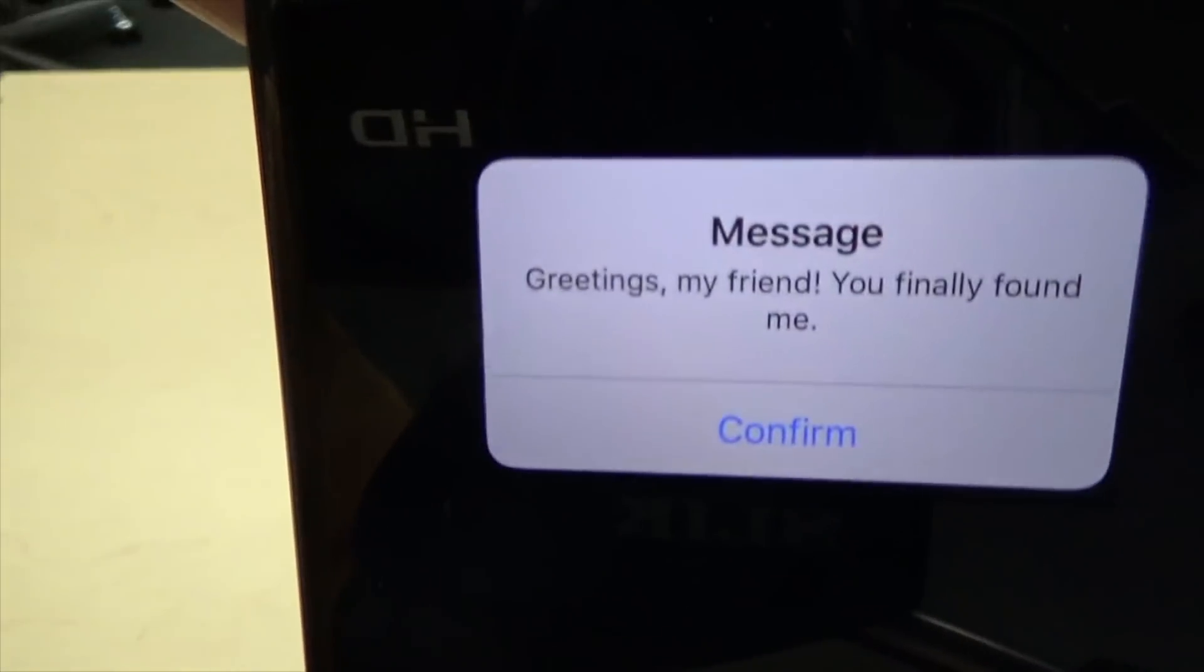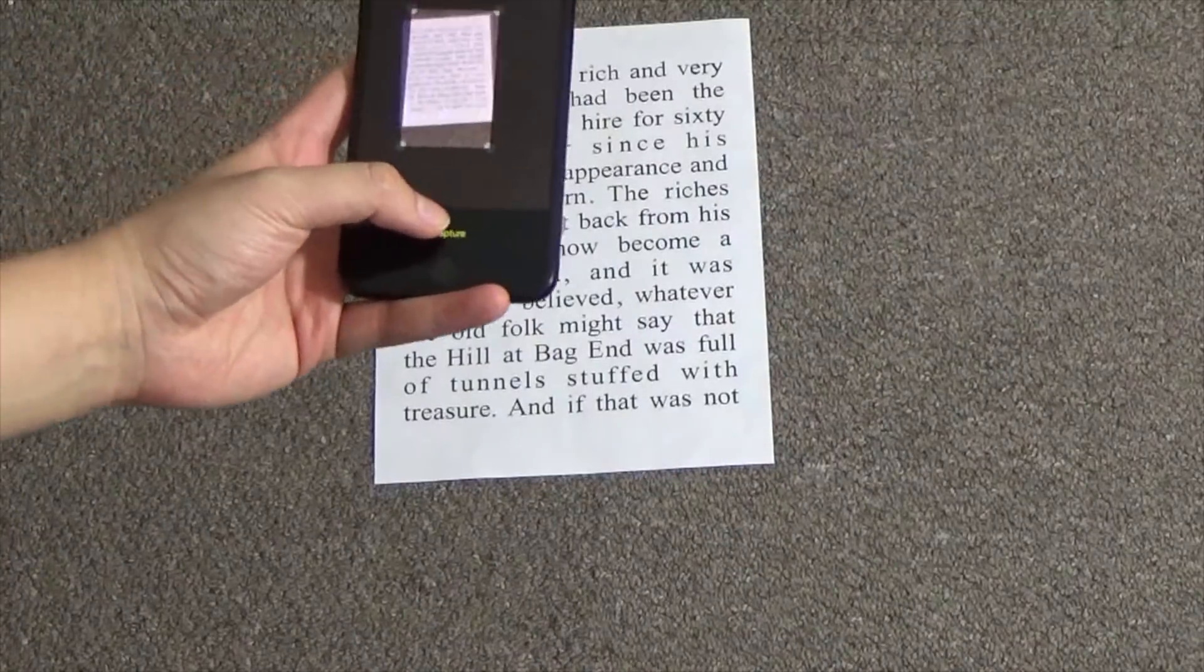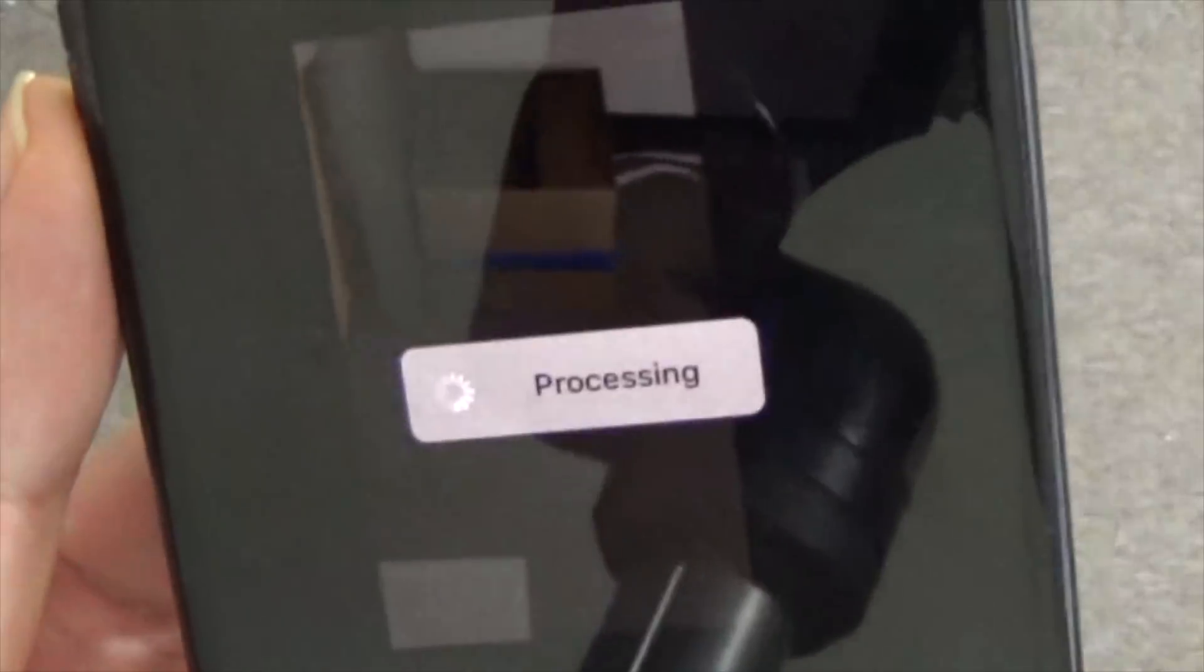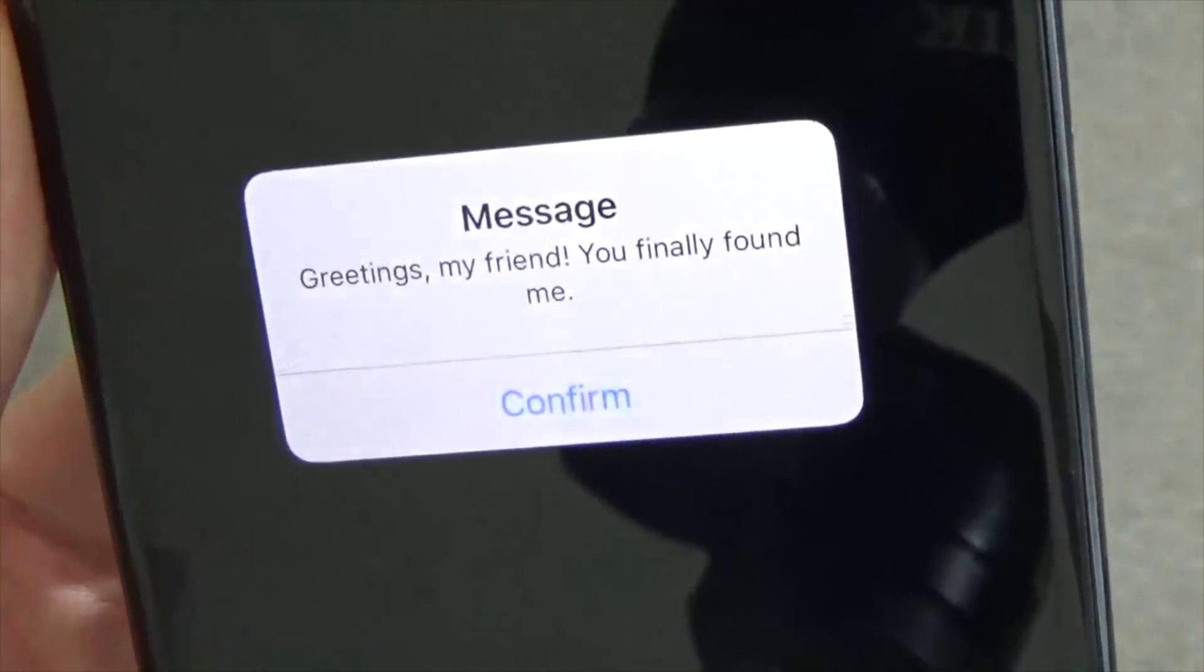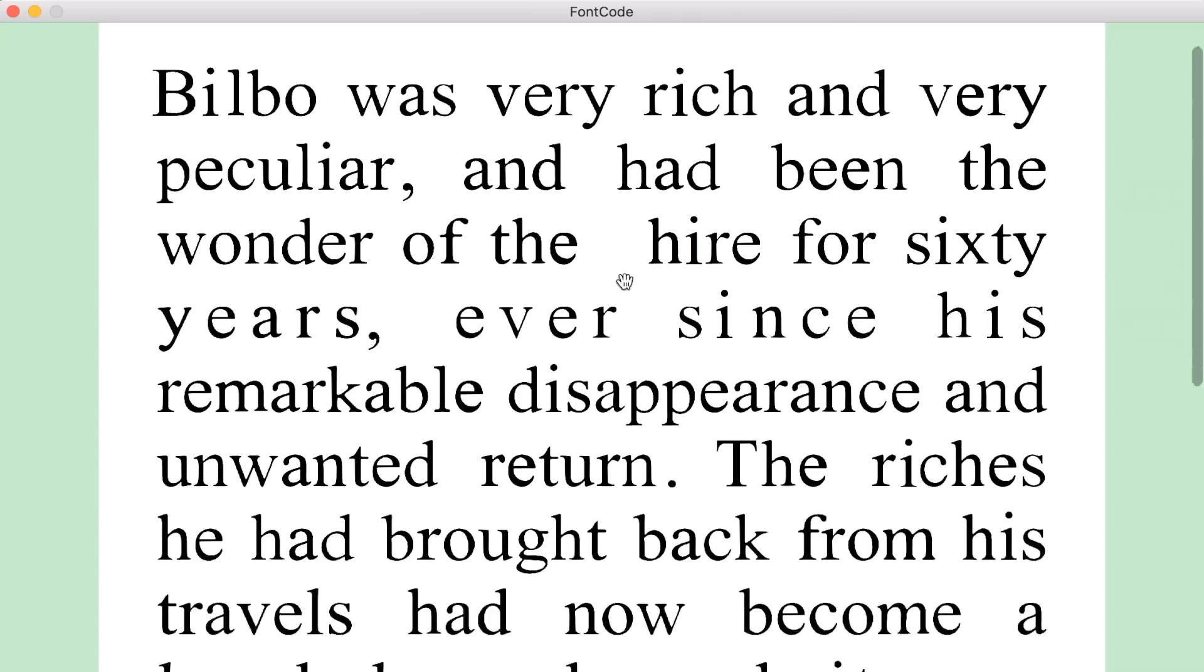To retrieve the embedded information, one can take a photo of a display device or a printed paper. Our method recognizes the glyph perturbation using convolutional neural networks. Our method can also decode from a digital document file.